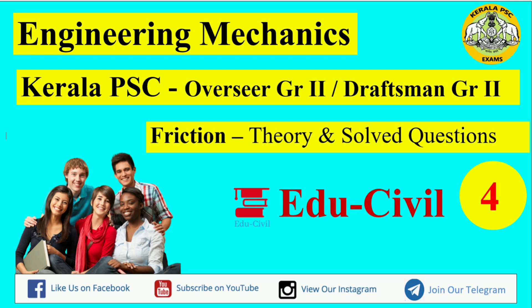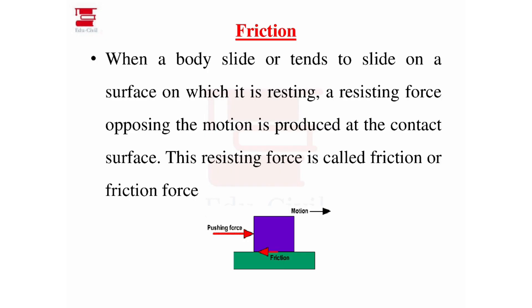Now friction is the first theory point covered in previous question papers in engineering mechanics. What is friction? Now you have a purple body here on a white surface. I have a pushing force in the right direction — now this body will move. The surface exerts a force in the opposite direction. This force is the friction force.